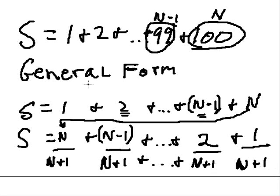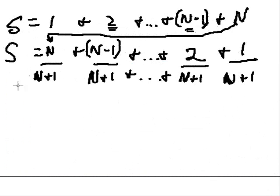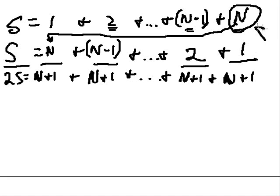So there's our generalized form. Now we've added this all up, and we add up the two s's, and we get two s's equals n plus 1 plus n plus 1 plus dot dot dot plus n plus 1 plus n plus 1. How many of these n plus 1's do we have? You got n of them.